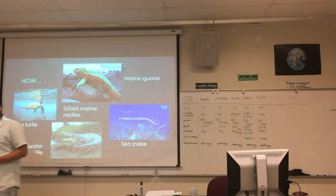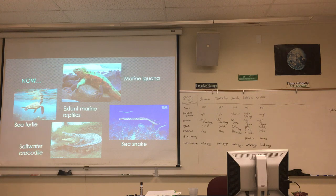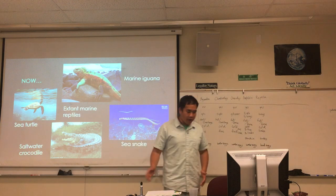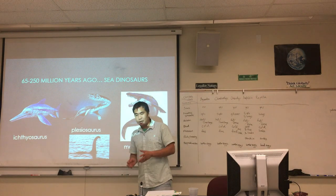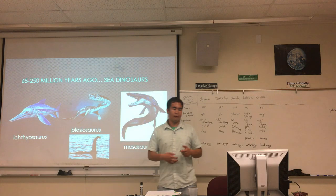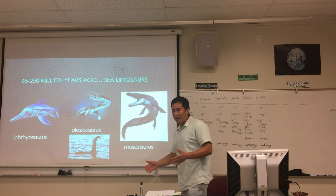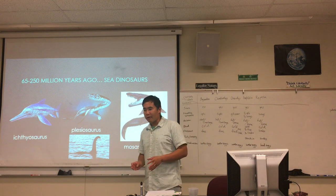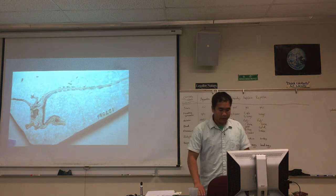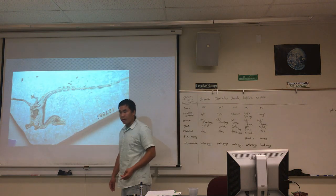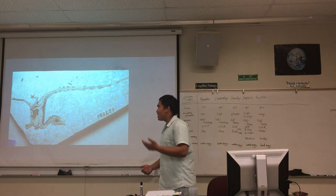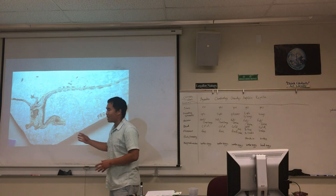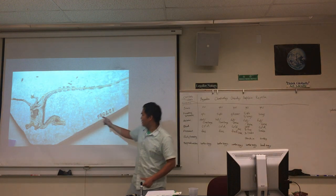We ended our discussion last week on Reptilia. Here are four modern-day examples of marine reptiles, and here are some extinct ones: ichthyosaur, plesiosaur, mosasaur — prehistoric marine dinosaurs. Our knowledge of dinosaurs comes solely from fossils. For example, this terrestrial raptor fossil — some scientists think they can see more than just bones. There appear to be feathers, or at least some interesting body covering.